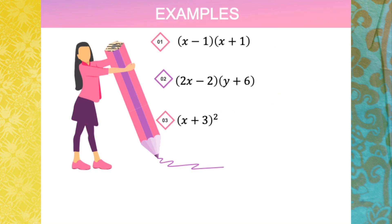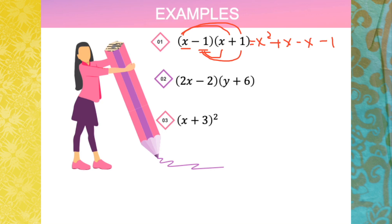Let's try more examples. For (x minus 1)(x plus 1), the first step is to distribute each term of the first bracket to the second bracket. x times x is x squared; x times 1 is plus x; negative 1 times x is minus x; negative 1 times 1 is negative 1. Since x and minus x are like terms, they cancel to zero. Therefore the final answer is x squared minus 1.